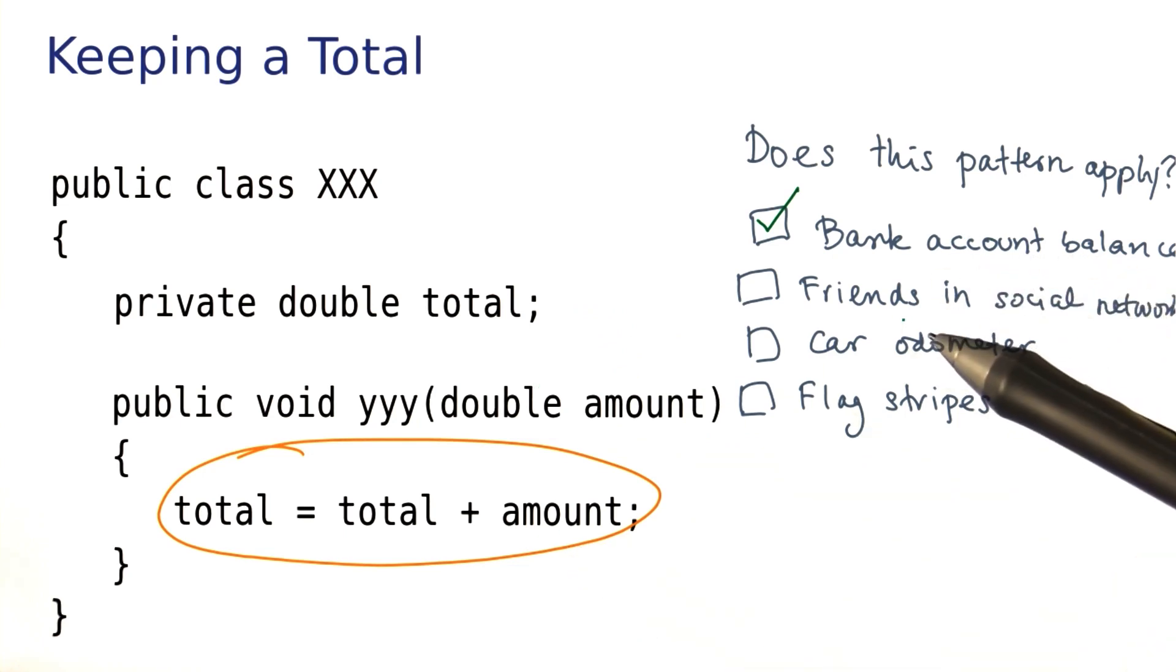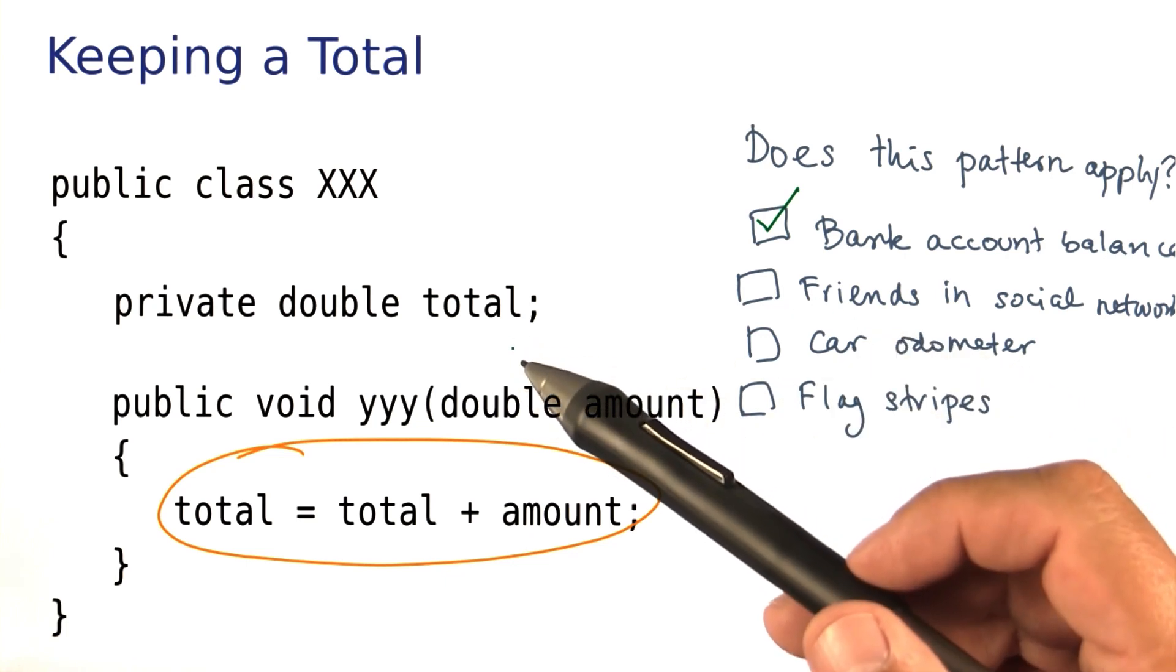With friends in a social network, I probably wouldn't be using this pattern because in a social network, you don't just collect the number of friends that someone has. You want to collect the actual friends, and that would not be a variable that gets incremented or decremented.